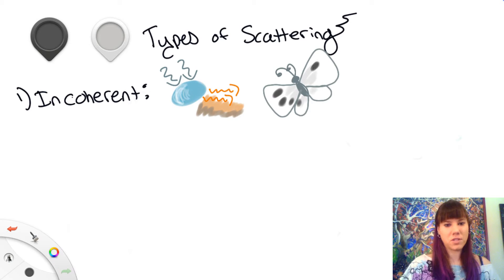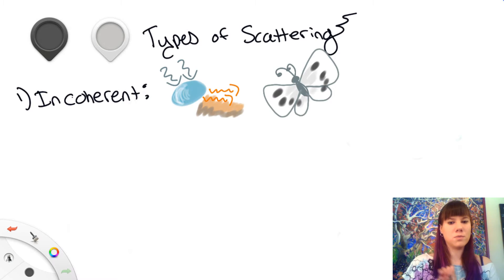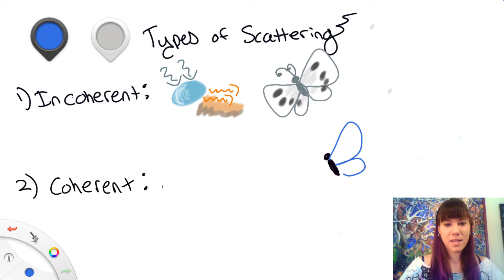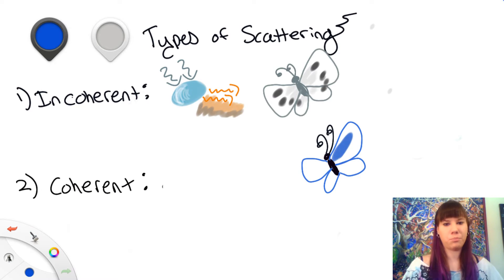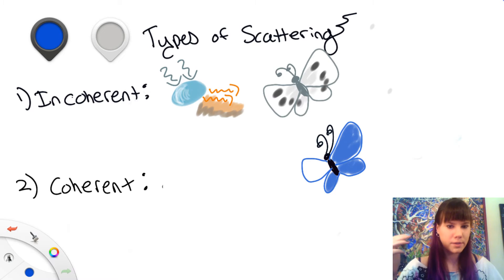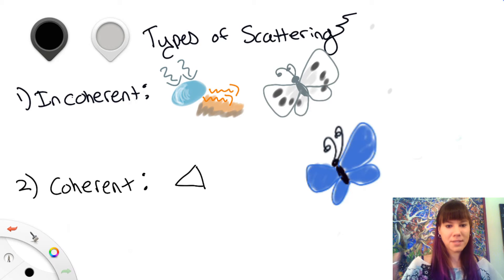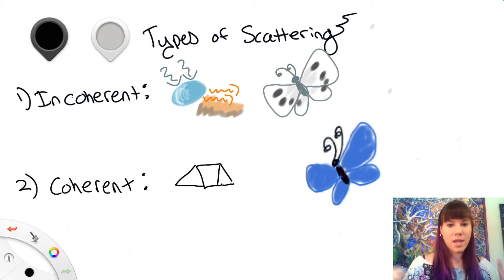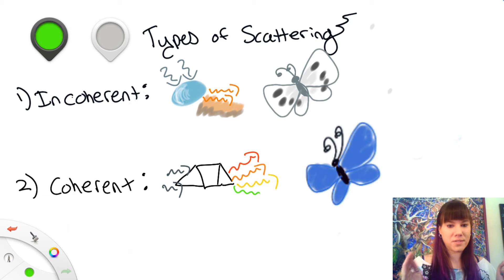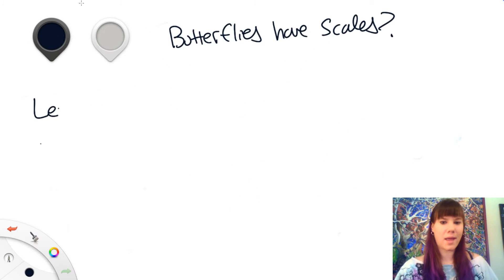Considering the fact that you've probably never looked at a small white butterfly and thought "oh my god, it's the most gorgeous thing I've ever seen," we're going to move on. The second type is coherent scattering, and this is what's employed by pretty much everything — butterflies, beetles, hummingbirds, peacocks. What happens here is you have a very organized and very regular structure, and light comes in and bounces out in a predictable fashion.